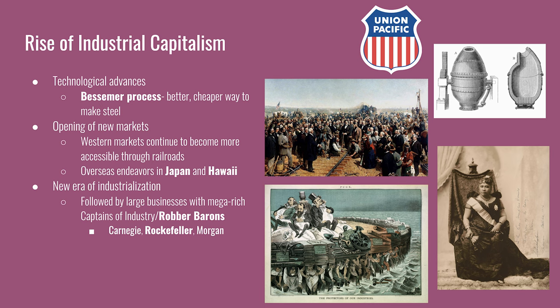This new era of industrialization is characterized by large businesses with mega-rich owners. Depending on who is describing them, they might be referred to as captains of industry or robber barons. Captains of industry credits them for their leadership in expanding the U.S. economy, while robber barons criticizes them for making their fortunes on the backs of the poor working class. Examples include Andrew Carnegie in steel, J.D. Rockefeller in oil, and J.P. Morgan in banking. The political cartoon on the screen takes a negative view of them as robber barons, sitting on bags of money while their barge is held up by workers.